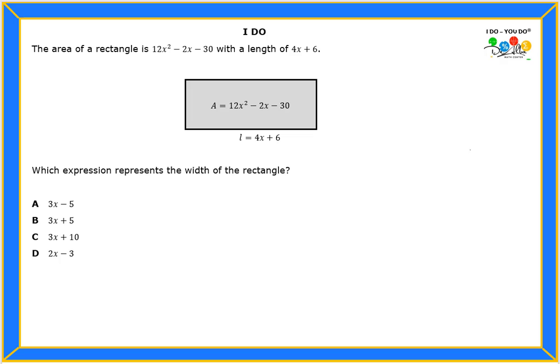Hello students, let's read the problem. The area of a rectangle is 12x² - 2x - 30 with a length of 4x + 6. Which expression represents the width of the rectangle?